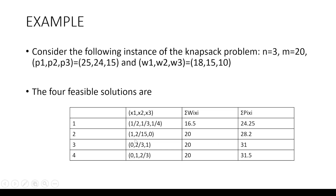The third feasible solution does not take object 1, takes 2/3 of object 2, and takes object 3 completely, giving a total weight of 20 and a profit of 31. The fourth feasible solution does not take object 1, takes object 2 completely, and takes 2/3 of object 3, with a total weight of 20 and a total profit of 31.5. These four conditions satisfy the constraints and are all called feasible solutions.